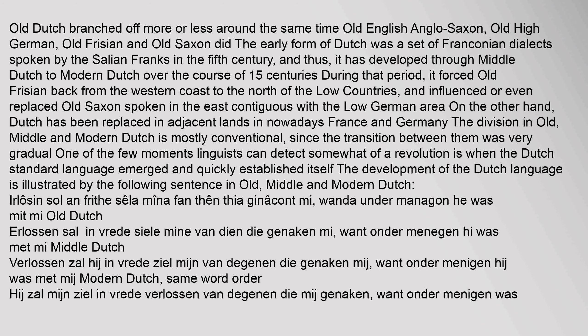Old Dutch branched off at more or less the same time as Old English (Anglo-Saxon), Old High German, Old Frisian, and Old Saxon. The early form of Dutch was a set of Franconian dialects spoken by the Salian Franks in the 5th century, and it developed through Middle Dutch to Modern Dutch over 15 centuries. During that period it forced Old Frisian back from the western coast to the north of the Low Countries, and influenced or replaced Old Saxon spoken in the east. The division into Old, Middle, and Modern Dutch is mostly conventional, since transitions were very gradual.